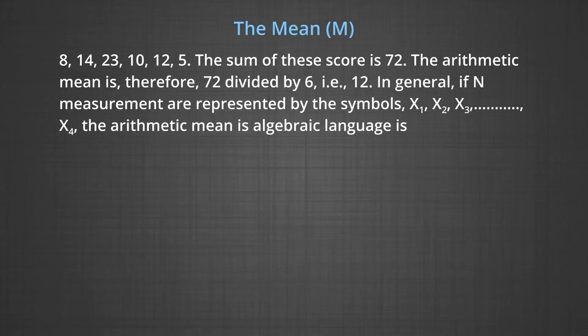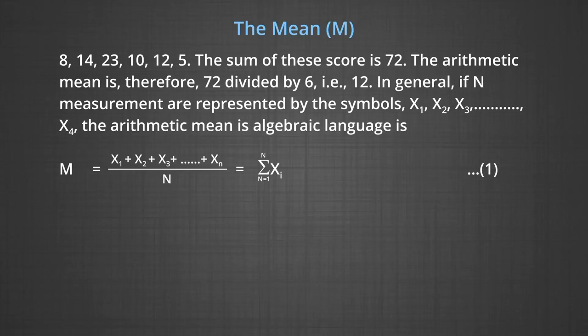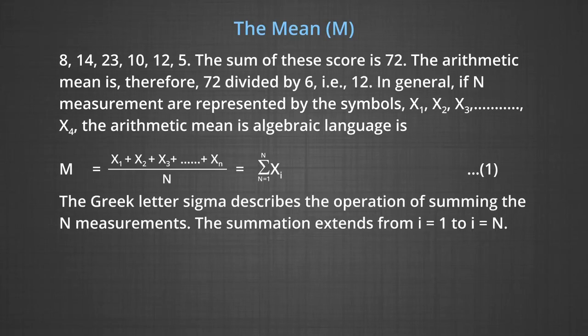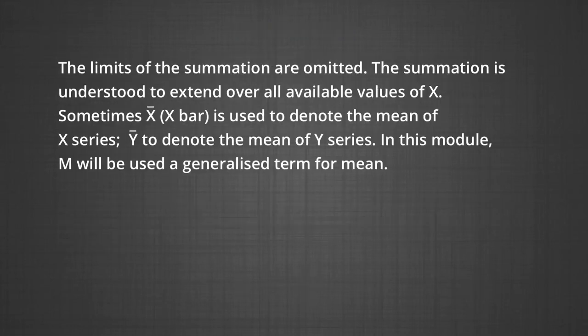In general, if n measurements are represented by x1, x2, x3 to xn, the arithmetic mean in algebraic language is: M equals x1 plus x2 plus x3 plus ... plus xn, divided by n. The formula uses summation from i equals 1 to n of xi. The Greek letter sigma describes the operation of summing the n measurements. The summation extends from i equals 1 to n. Generally, M equals sigma x upon n, where the summation is understood to extend over all available values of x.